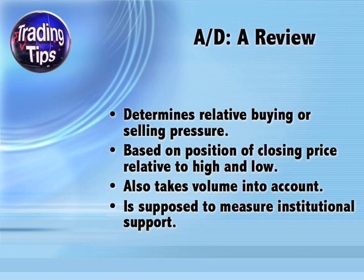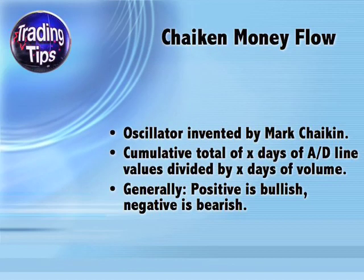The closer a stock closes to its low, the more bearish. Volume is also taken into account with a formula reviewed in episode 37. All said and done, the accumulation distribution line is intended to measure institutional support, since it's the big money institutions that really move the market. Chaikin Money Flow, which uses accumulation distribution, was invented by Mark Chaikin.